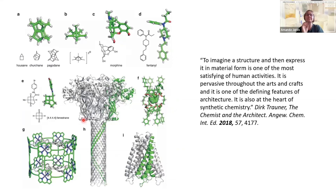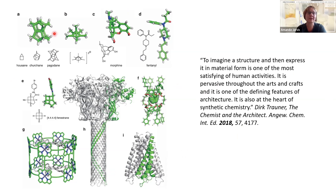Many other chemists have talked about design. I wanted to highlight a few papers. There's a quote from 'The Chemist and the Architect': 'To imagine a structure and then express it in a material form is one of the most satisfying of human activities. It is pervasive throughout the arts and crafts, and it is one of the defining features of architecture. It is also at the heart of synthetic chemistry' — by Derek Fulner. One image in that paper shows how molecules we've represented also match ideas of architecture, like a same-shirt chain or the idea of a column. I would suggest checking this out if you're interested — it's a really nice discussion of similarities between chemistry and architecture.